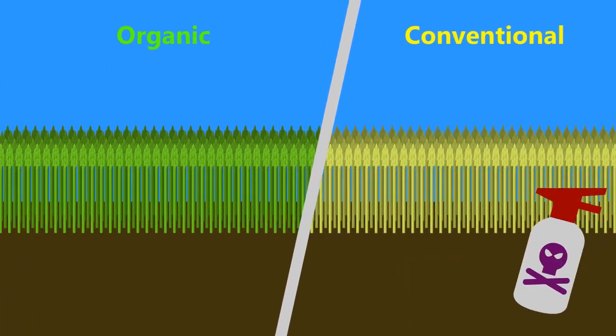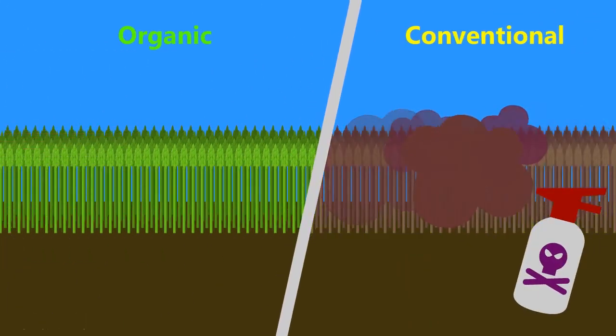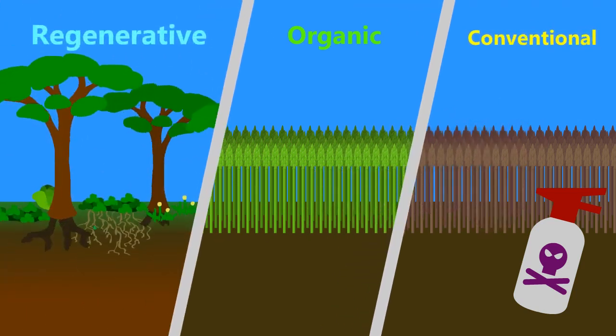Even organic agriculture, while not as bad, still does more harm than good. Regenerative agriculture is a way to reverse this trend to actually make a positive impact on the land.